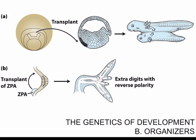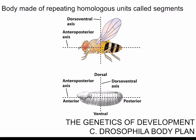Before we go deeper into the genetics of development, let us discuss some aspects of the fruit fly Drosophila melanogaster body plan as well as its lifecycle. The belly of the animal as well as of the embryo is called ventral, whereas the back is called dorsal. The head of both the adult animal and the embryo is called anterior, and the tail is called posterior. So we have basically two axes — two ways for cells to know where in the embryo they are.